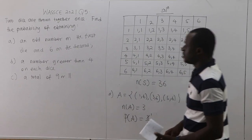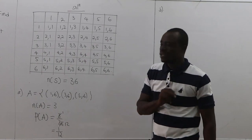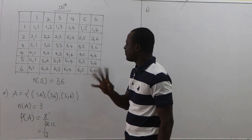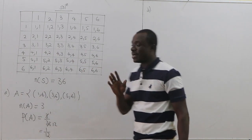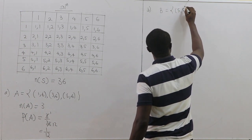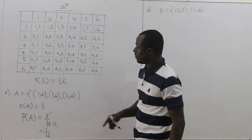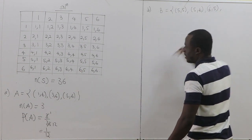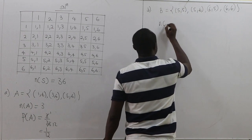A number greater than four on each die. So (1,5)? No — one is not greater than four. Four is not greater than four, so (4,5) is excluded. The first valid outcome is (5,5). Let B denote this event. So (5,5) is part of B, (5,6) is also part. (6,1) is not part because one is less than four. (6,5) is part, and (6,6) is also part — a number greater than four on each die.